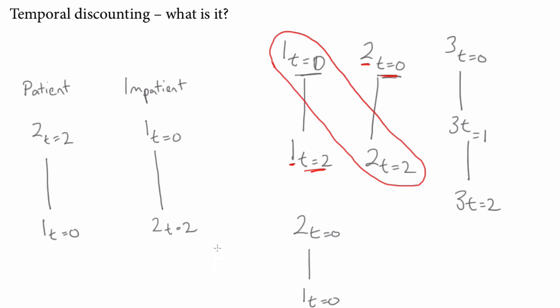So we can imagine there'll be both sorts of person around, right? Both people who are patient and people who are relatively impatient.